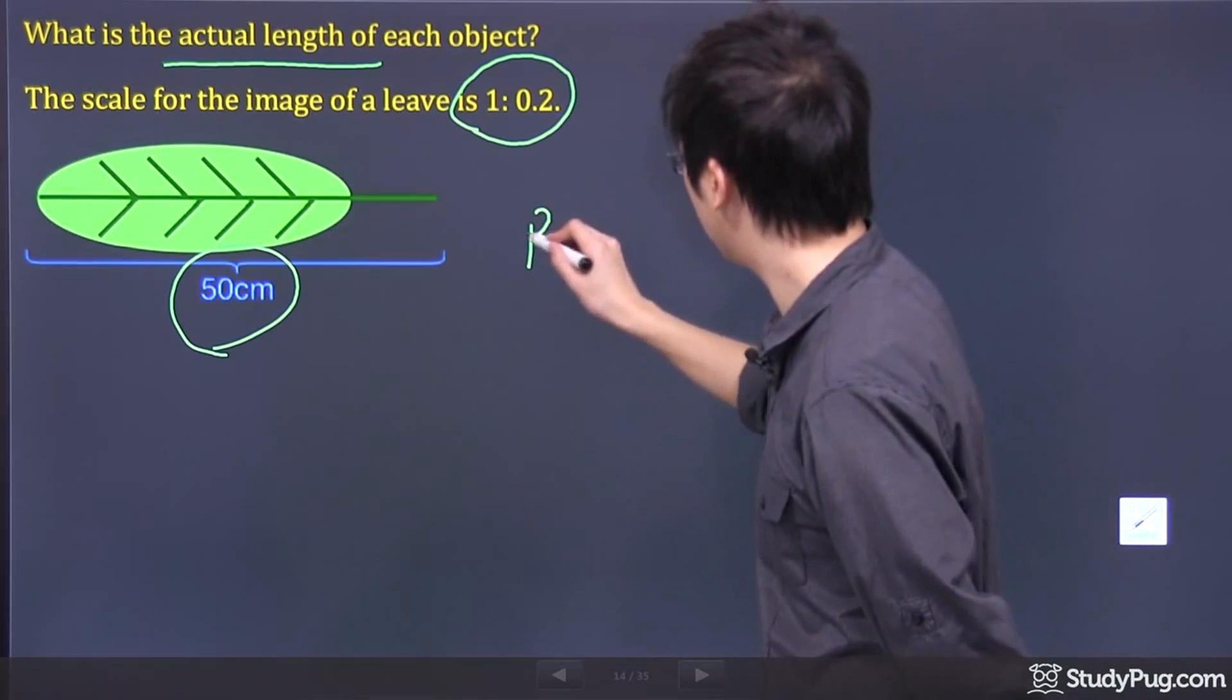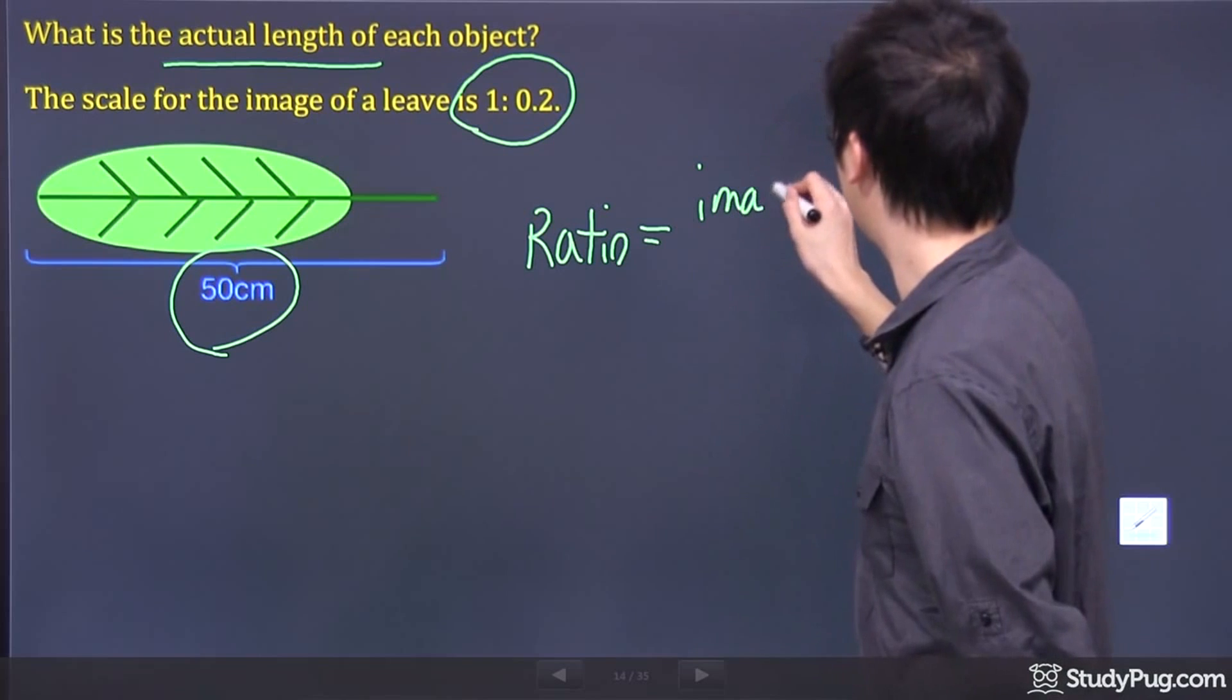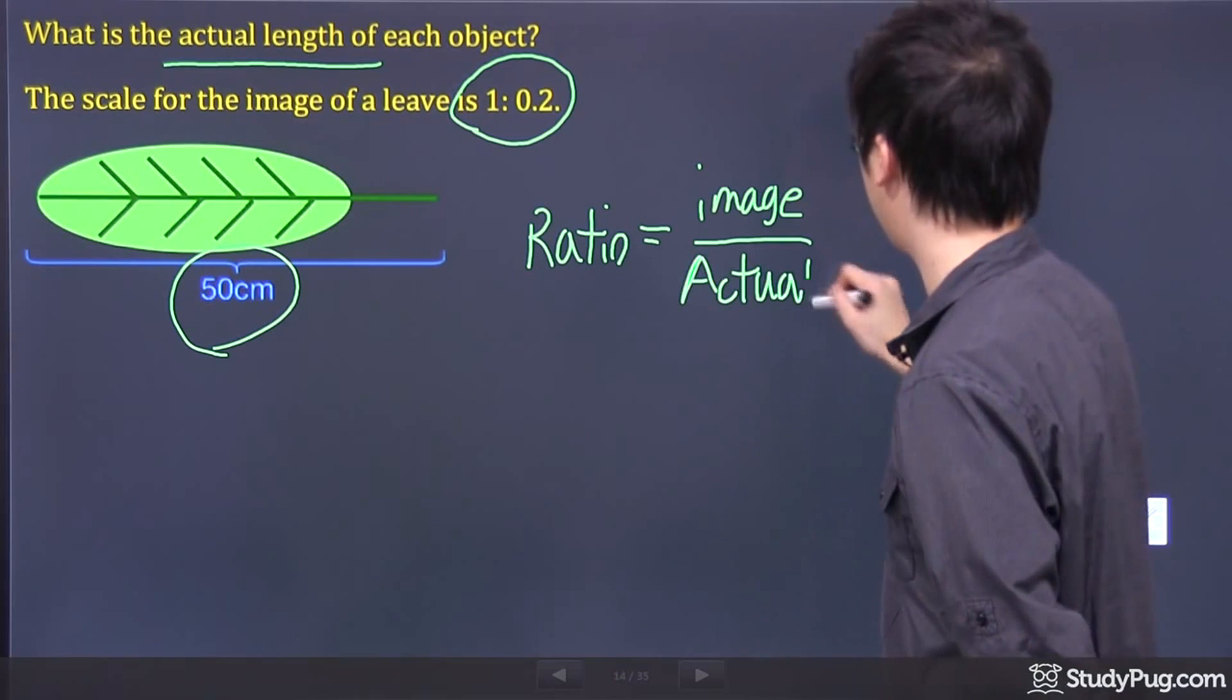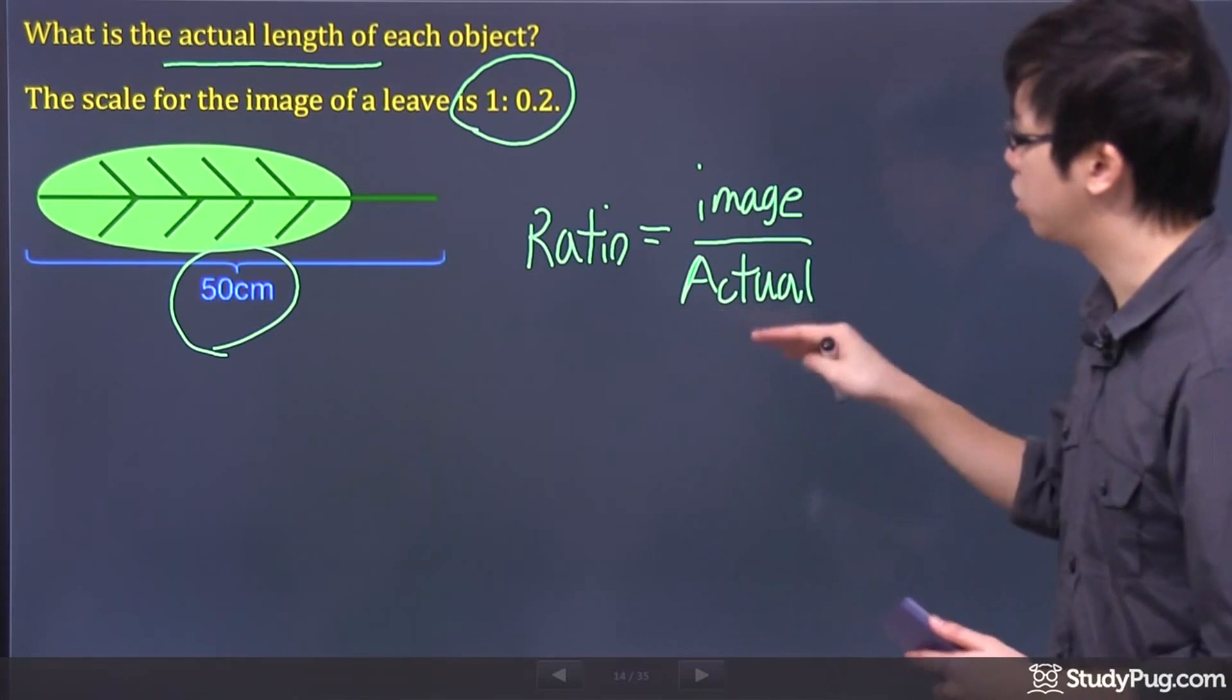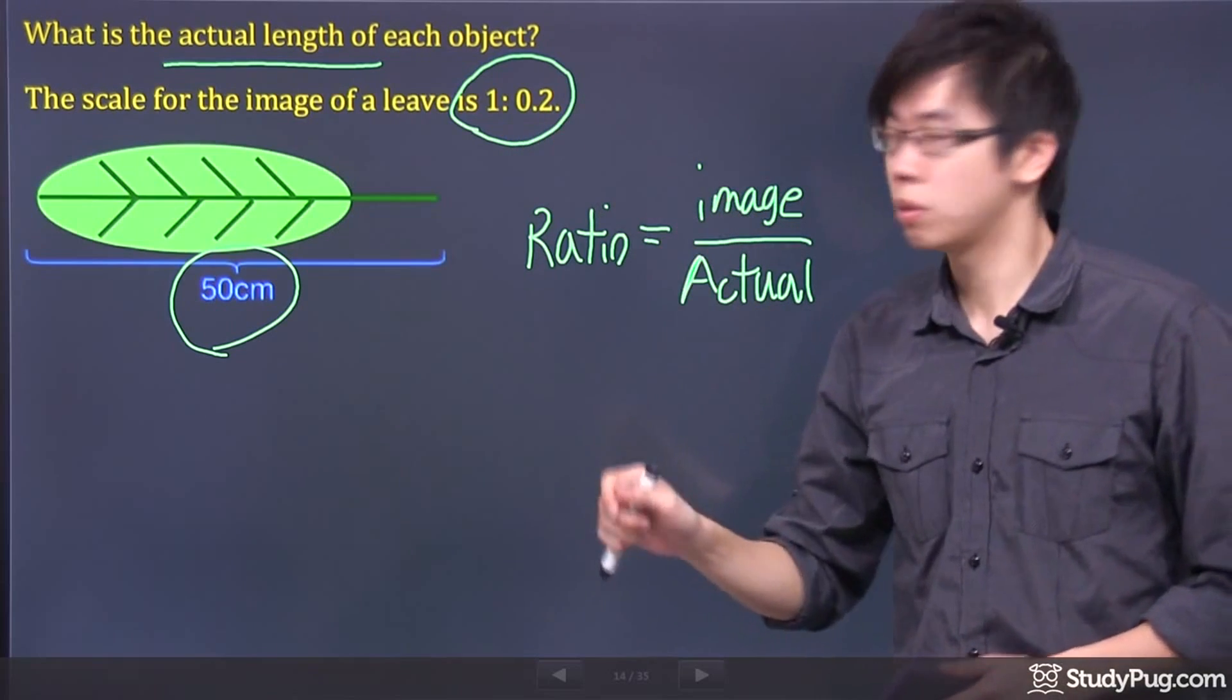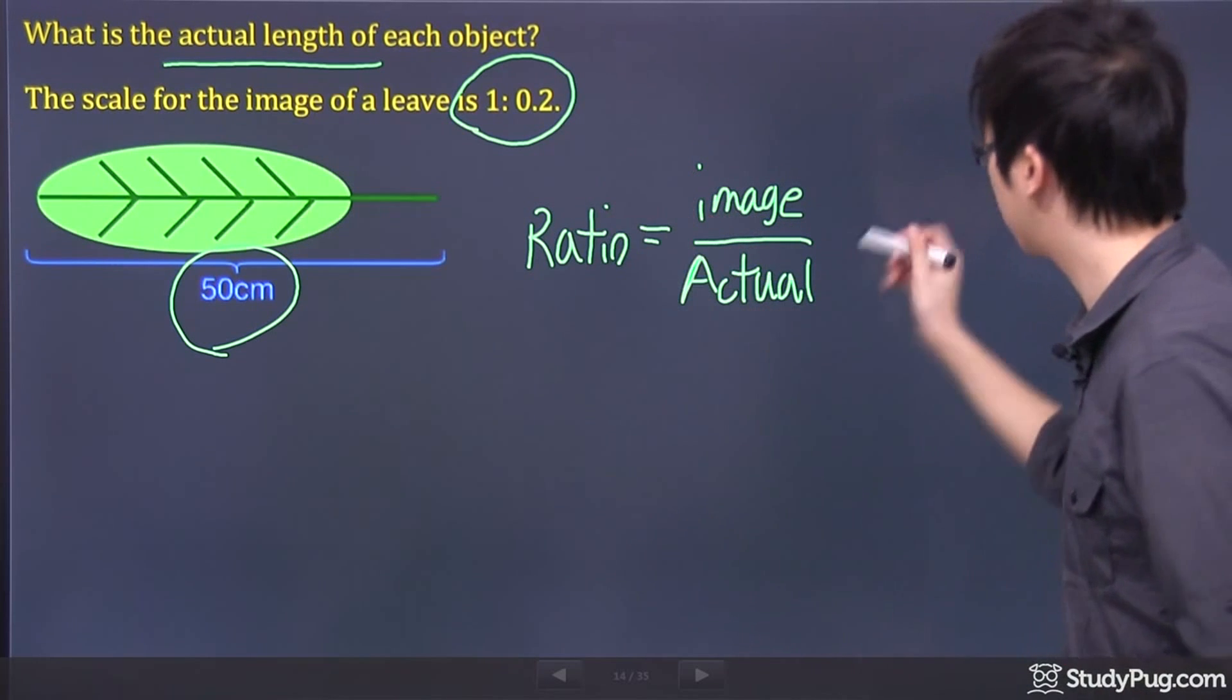The equation says the ratio is based on the image divided by the actual part of the object. So what happened is the image on top, the actual object is on the bottom. So let's continue on with our work right here. So we know the ratio is 1 and 0.2. So the 1 is the image, and the 0.2 is the actual.